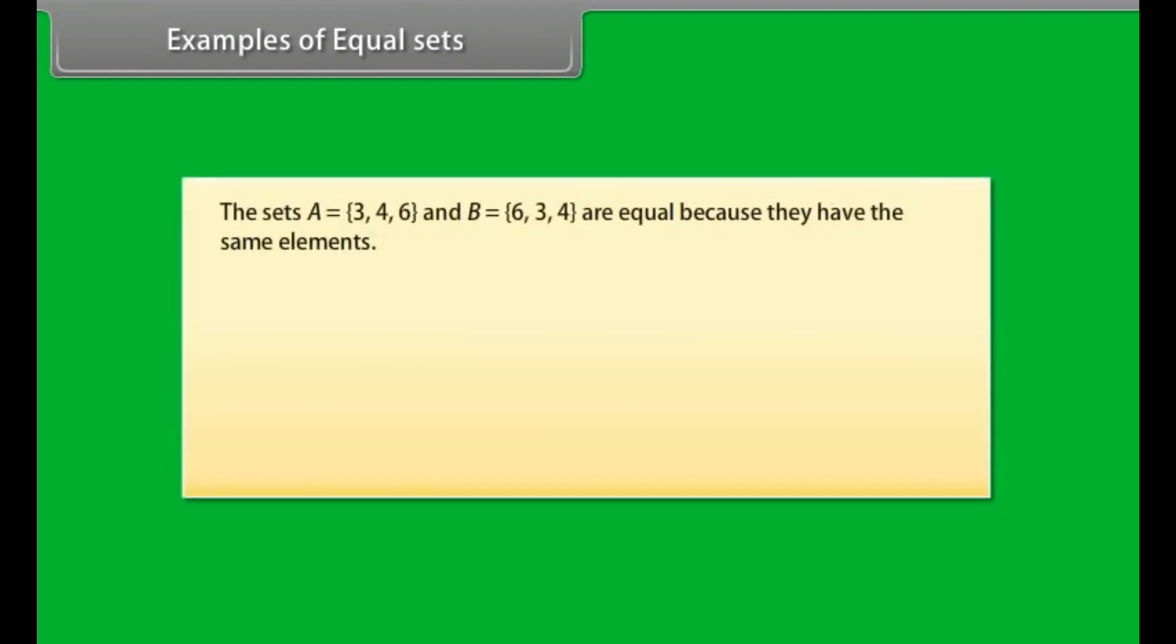Examples of equal sets. The sets A equals {3, 4, 6} and B equals {6, 3, 4} are equal because they have same elements.